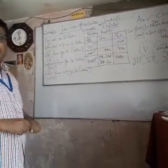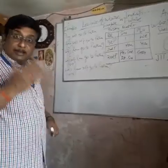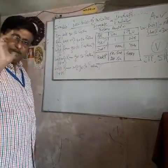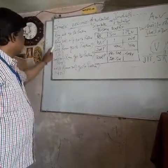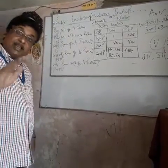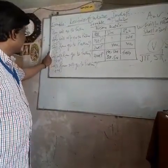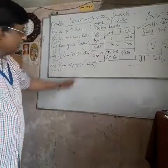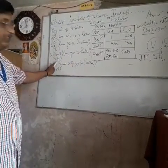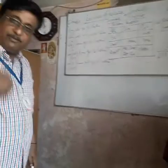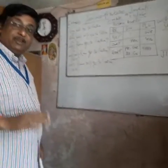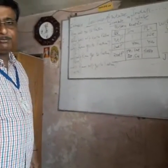Here are the examples. Positive sentence: 'Ram will go to Patna.' Negative sentence: 'Ram will not go to Patna.' Interrogative sentence: 'Will Ram go to Patna?' Negative plus interrogative: 'Will not Ram go to Patna?' And interrogative plus negative: 'Will Ram not go to Patna?'